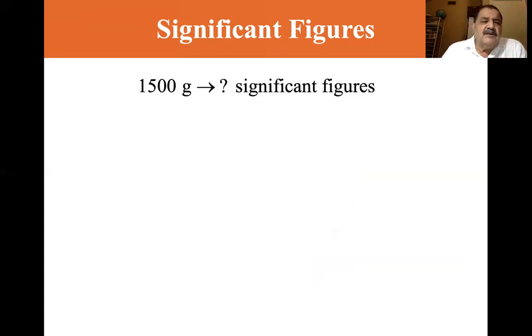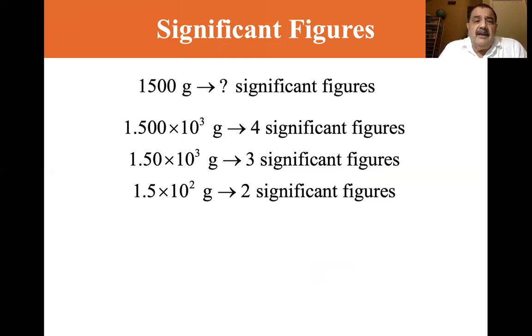Okay. Let's, how many significant figures are here? Well, the fact that it doesn't have a decimal place after, if it had a decimal place after the second zero, you know, one, five, zero, zero point, then I would say, well, that's four significant figures. But looking at this, I would guess that this is only two significant figures. And you can use the scientific notation to help you. And you can see here,